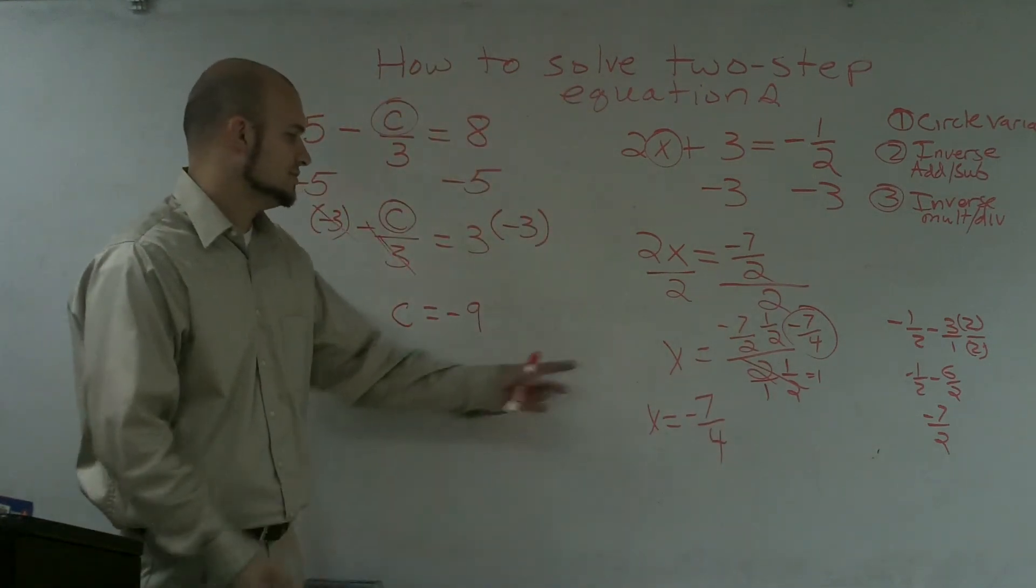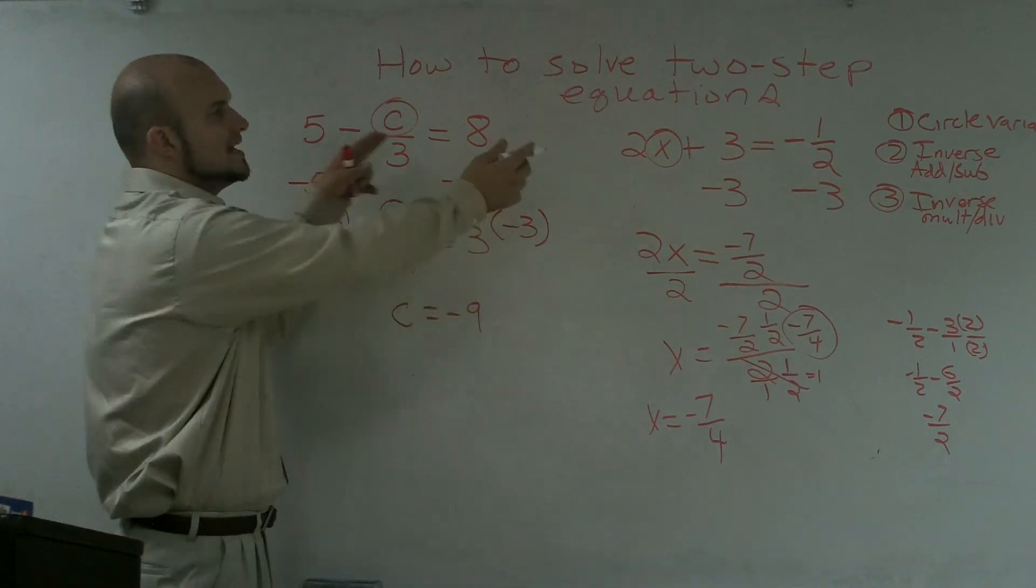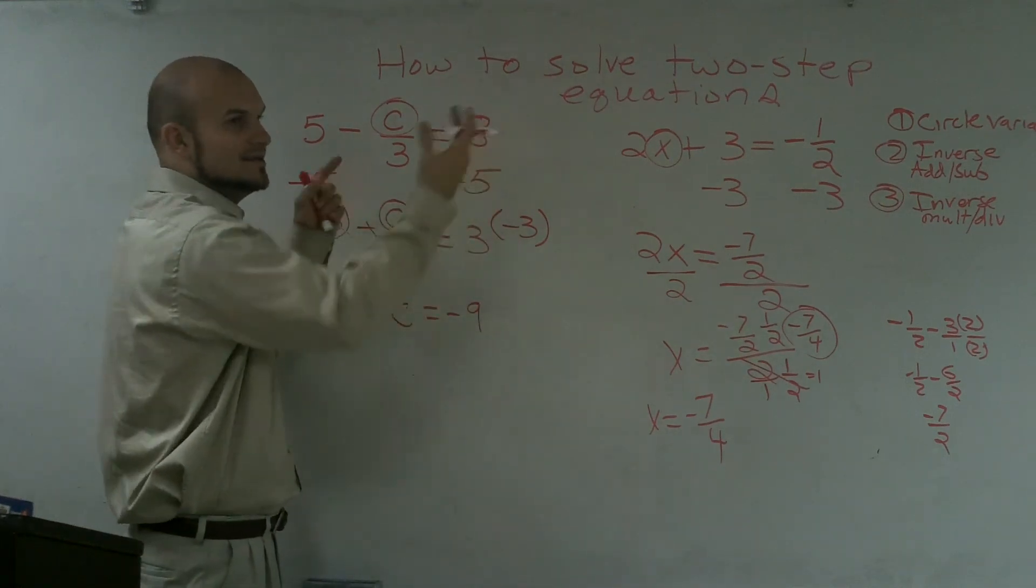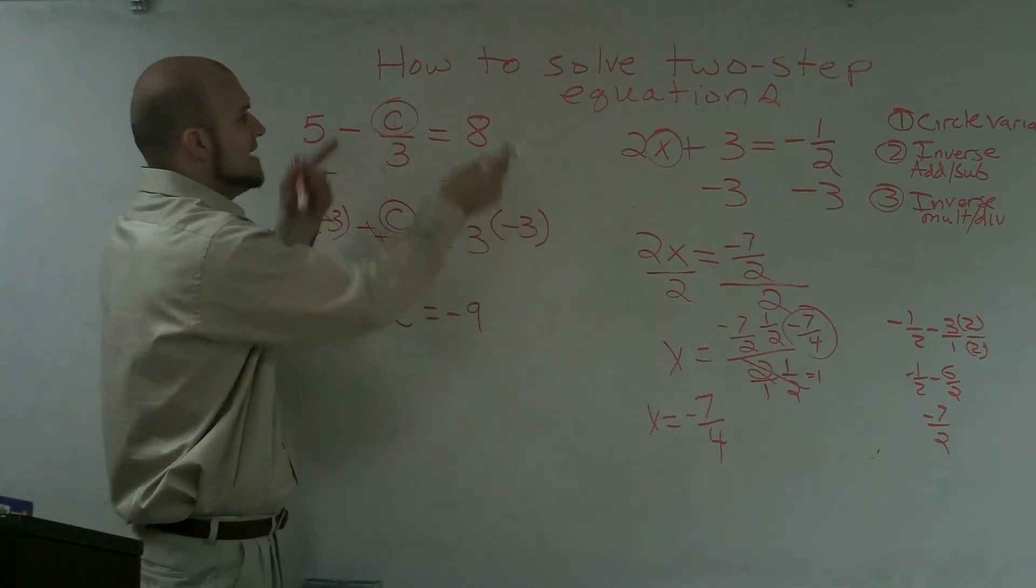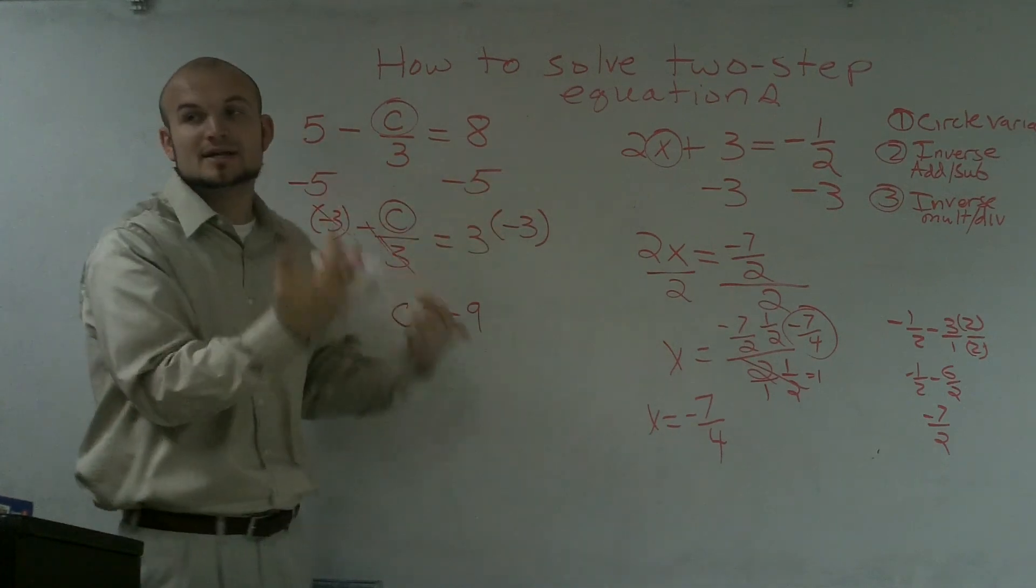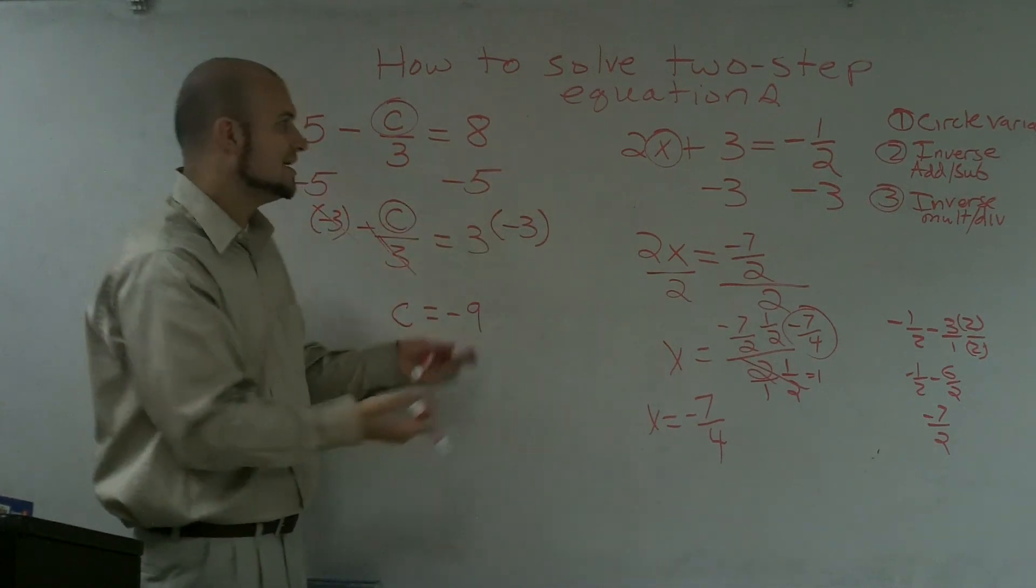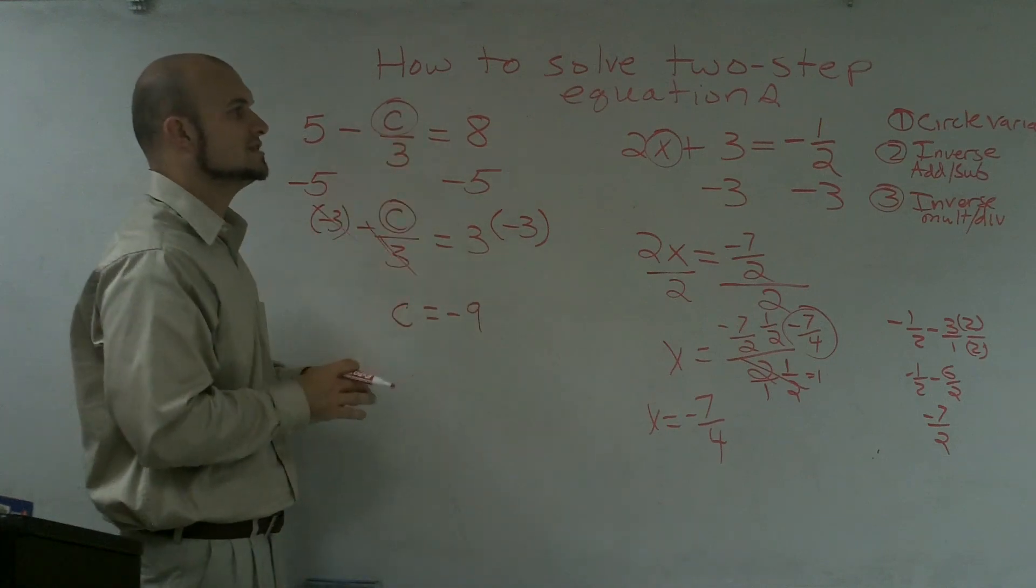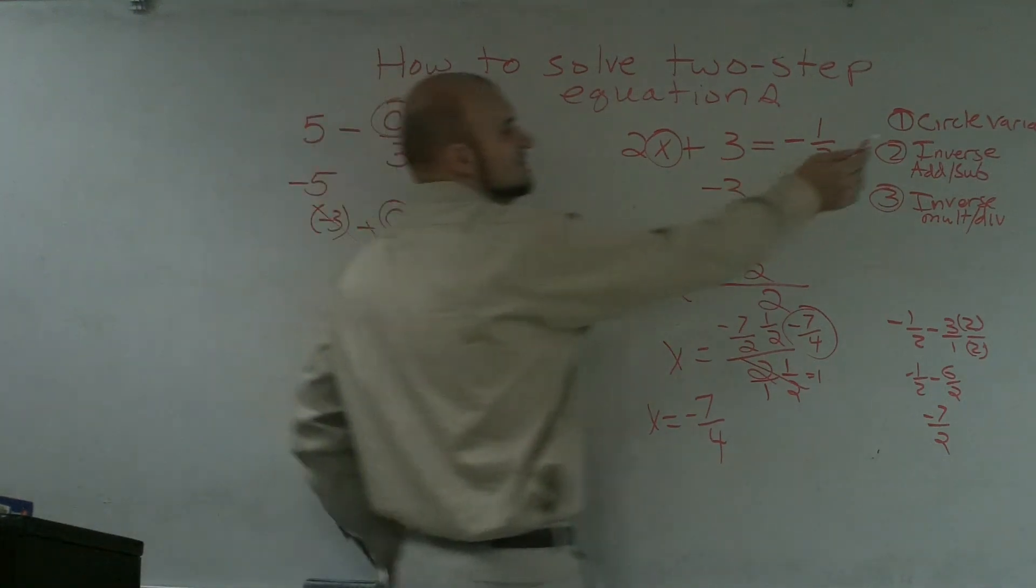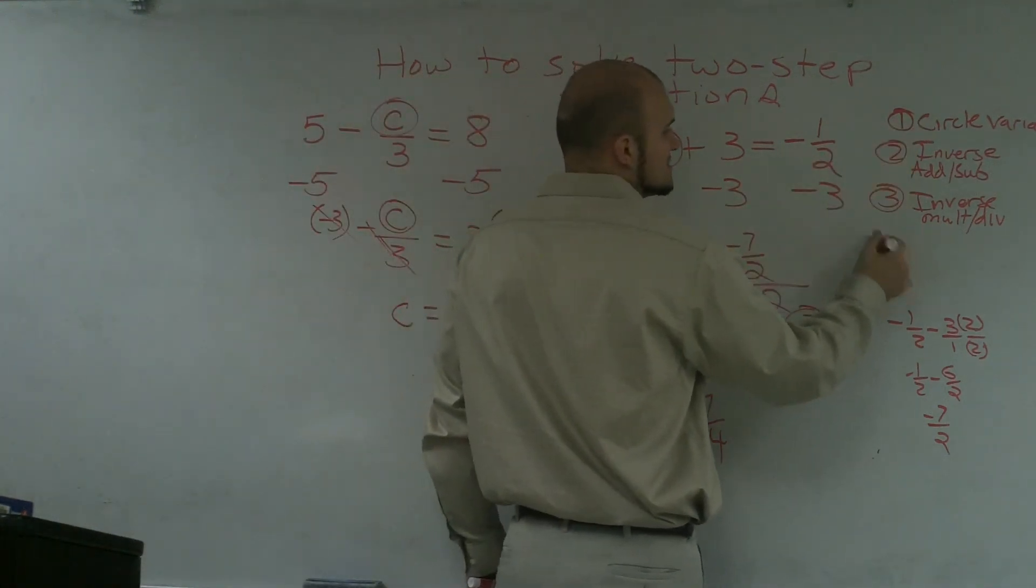The last thing you guys can do is go ahead and plug these in, plug these back into the variable. And then you can plug those answers back to the variable to double-check, make sure they're correct. I'm running out of tape, so I don't have any more time to show these. But that's how you solve two-step equations. The main important thing is you follow these steps.